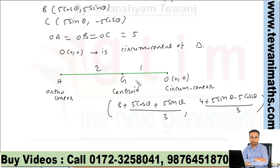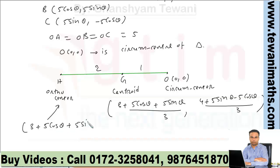The ratio HG:GO is 2:1, so using the section formula we can get the coordinates of H. The orthocenter coordinates are: H = (3 + 5cosθ + 5sinθ, 4 + 5sinθ - 5cosθ).